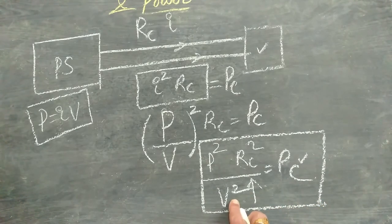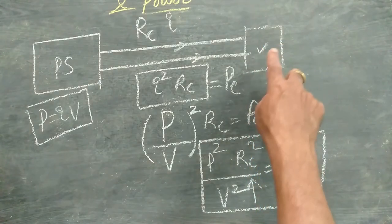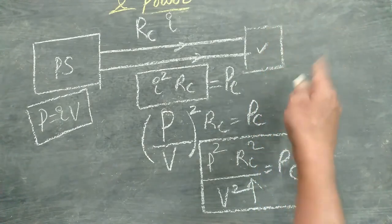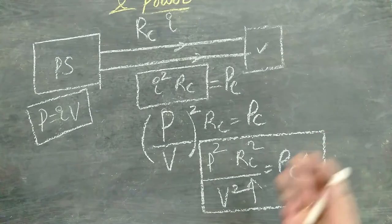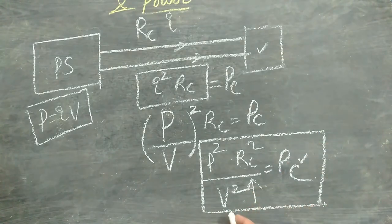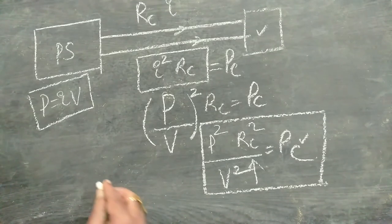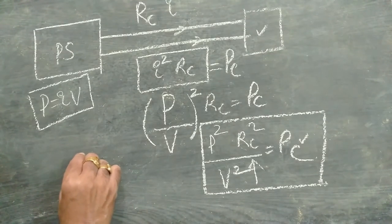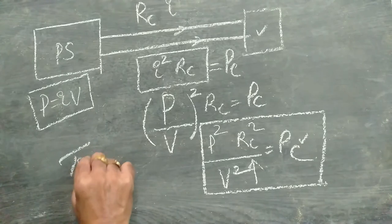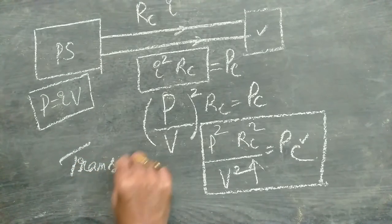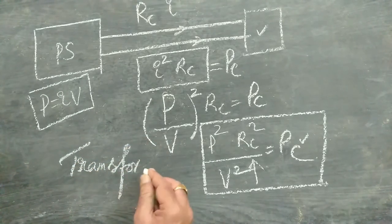But keeping the higher voltage at the other end, at the destinations end or at the villages end or cities end is highly dangerous. Then how to solve this problem? So this problem can be solved with the help of a device called transformer.